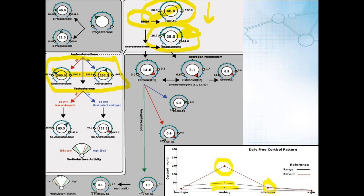What else does inflammation drive? It makes prostaglandins, and prostaglandins really drive aromatase. Aromatase turns androgens into estrogens, and look at this gentleman's estrogens — very, very high. Overall this patient really has a picture of inflammation: decent DHEA but low sulfate, and then high levels of estrogens and high levels of cortisol.